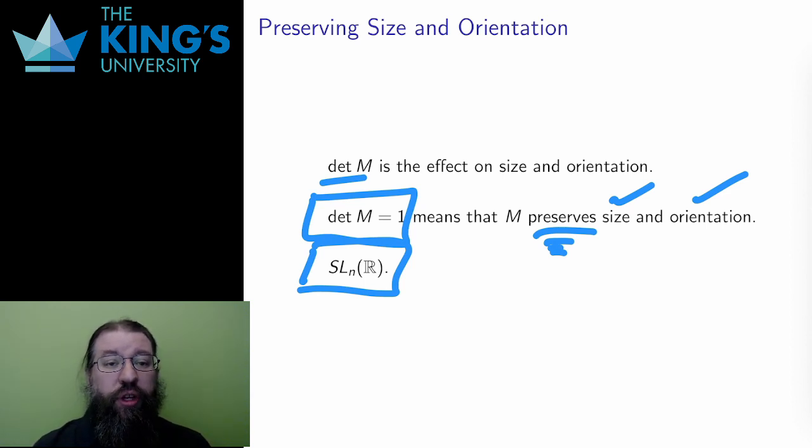This is a stronger symmetry than just GL_n. More is preserved by this. In mathematics, it is common to get these tiers of symmetry, ordered by how much is preserved, with some transformations preserving more, and some transformations preserving less.